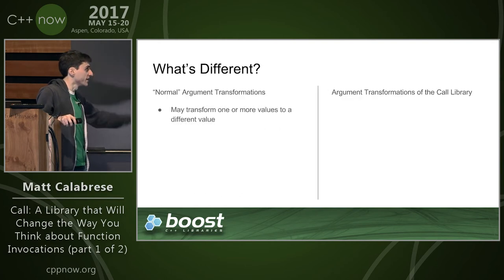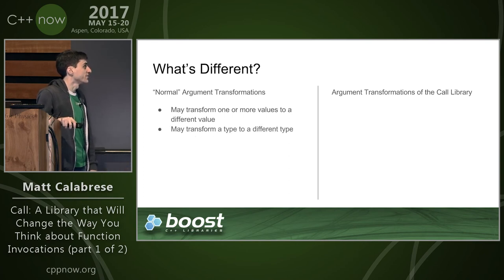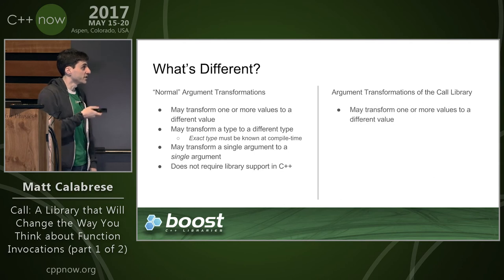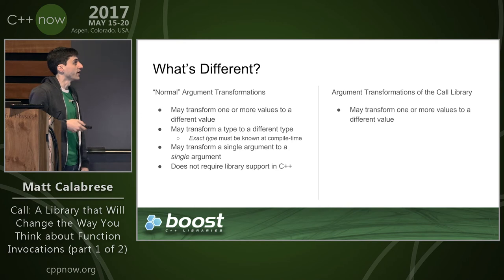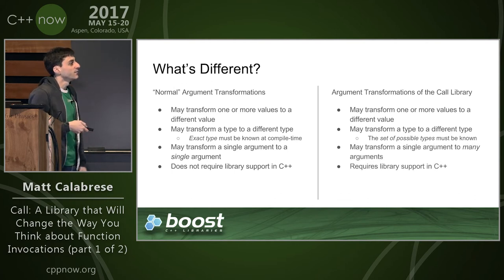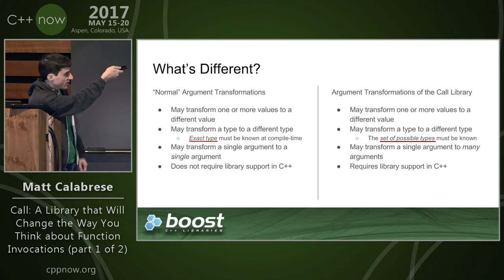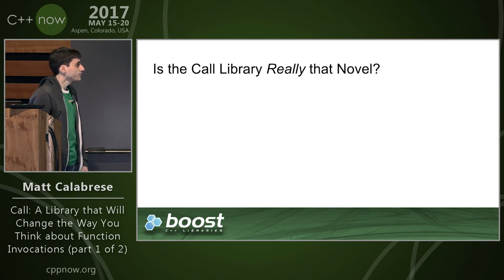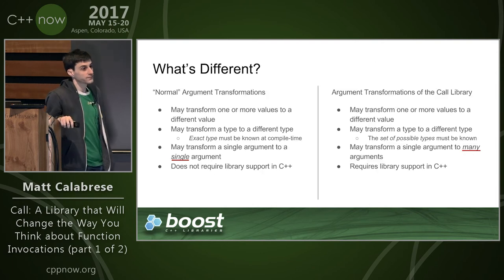Normal argument transformations in C++ without libraries: you can transform one or more values to a different value; you can transform a type to a different type (the exact target type must be known at compile time); and you can transform a single argument to a single argument. With the call library, it's similar, but the set of possible types must be known rather than the exact type, and you can transform a single argument to many arguments — though it requires library support.